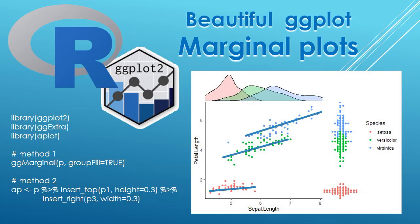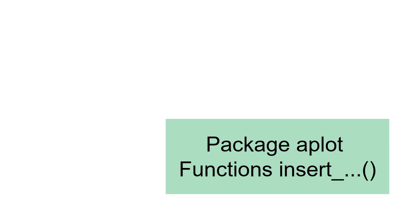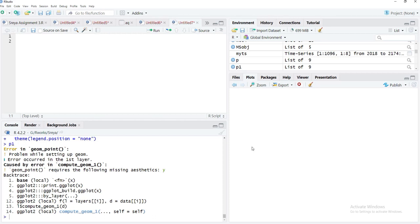Marginal plots are useful to show correlation as the main plot, the distribution of the x variable as a top plot, and distribution of the y variable as the plot on the right. There are two methods to get marginal plots: one using the ggMarginal function from the ggExtra package, and the other using insert functions from the aplot package. We will see both in this session.